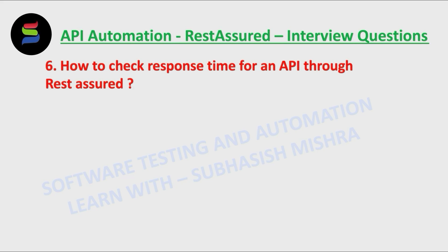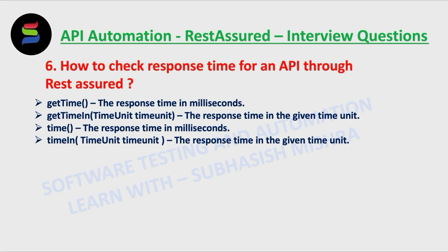How to check response time for an API. When a request is sent to a server, it responds with a response. The amount of time taken between sending a request to the server and retrieving a response back from the server is called response time. To check the performance of the API, we can check the response time.